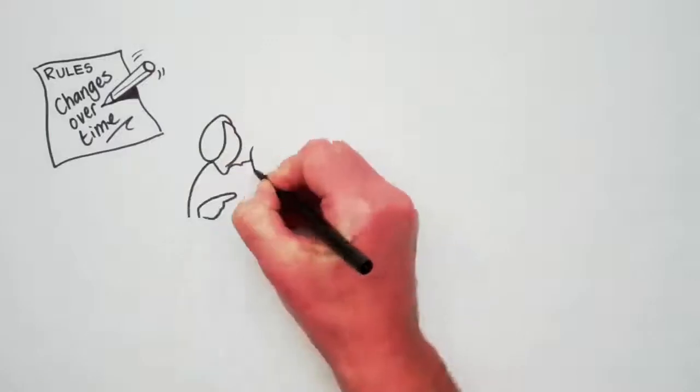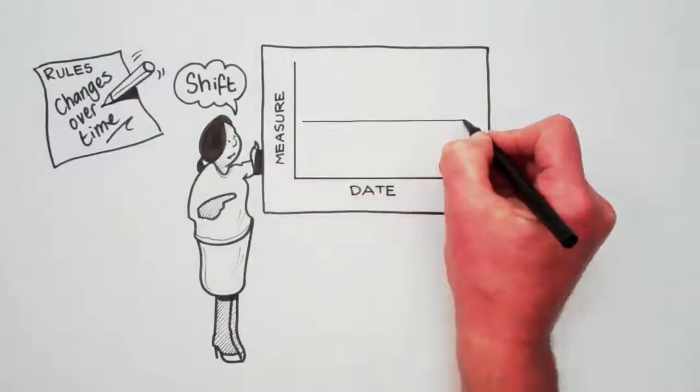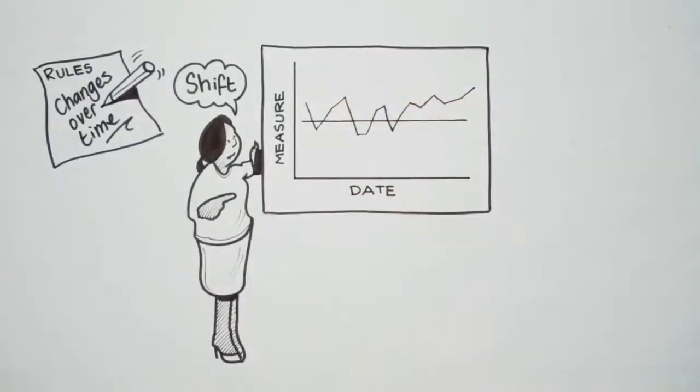There are a few simple rules that can help you spot any changes over time. A shift in the data is when you have six or more data points hanging in a group above or below the median line. It's an indication that the data has moved to a level and stayed there.